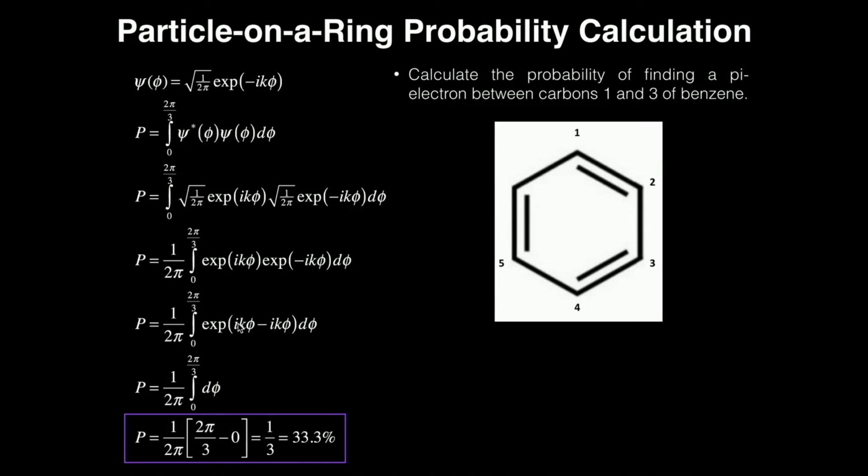But positive ik phi minus ik phi, and that's what's inside the exponential function d phi. Now, if you take ik phi minus ik phi, this obviously becomes zero inside the exponential function.